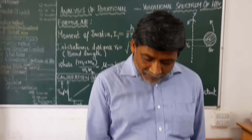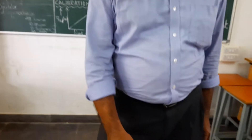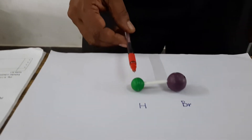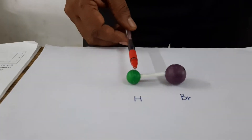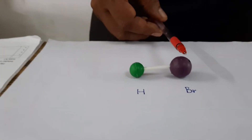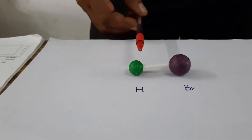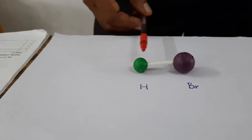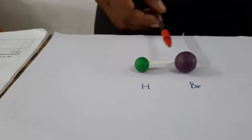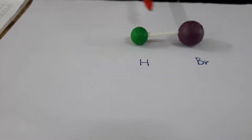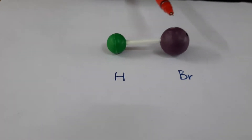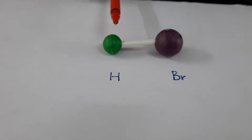The model of hydrogen bromide can be visualized in this way. This represents a hydrogen atom and this represents a bromine atom. These two atoms are held by a polar covalent bond. Our aim in this experiment is to estimate the length of this covalent bond.